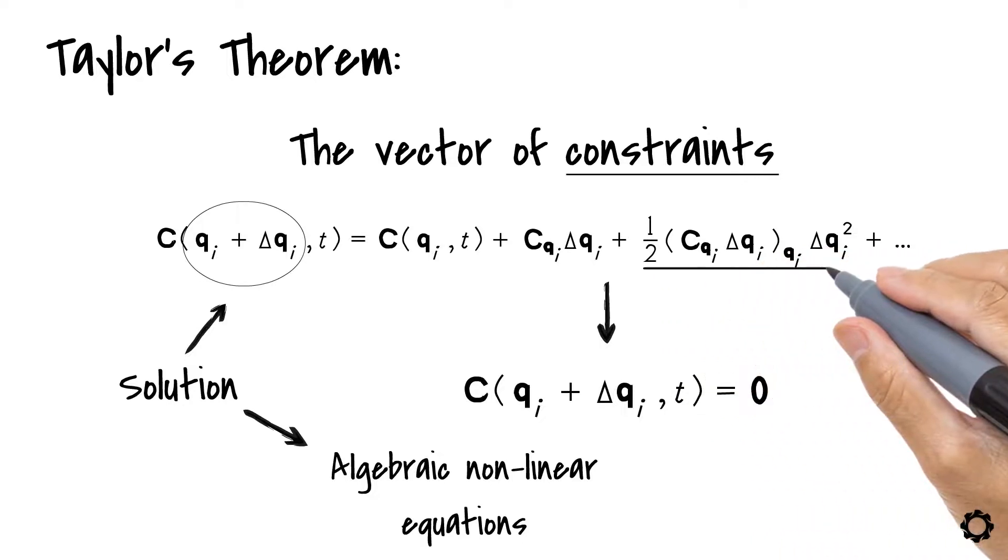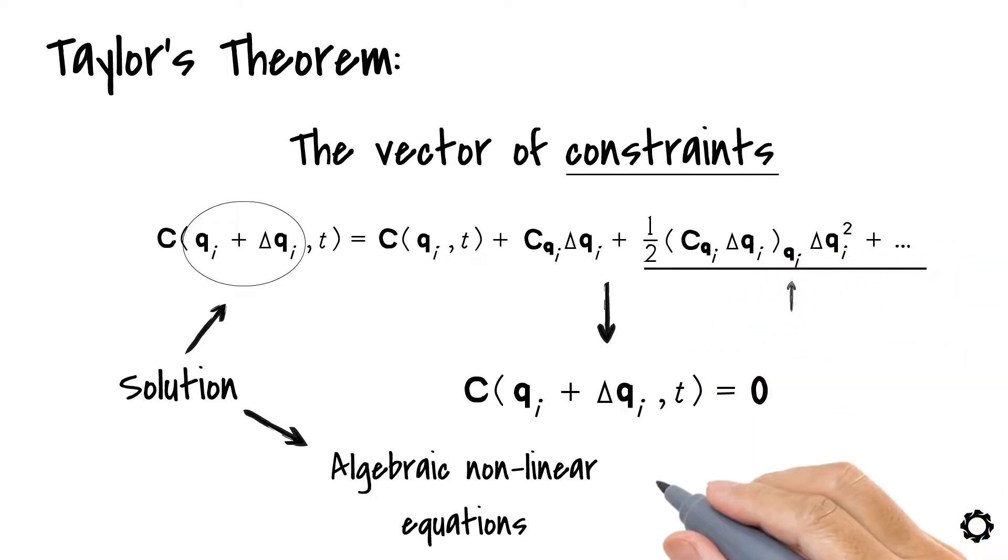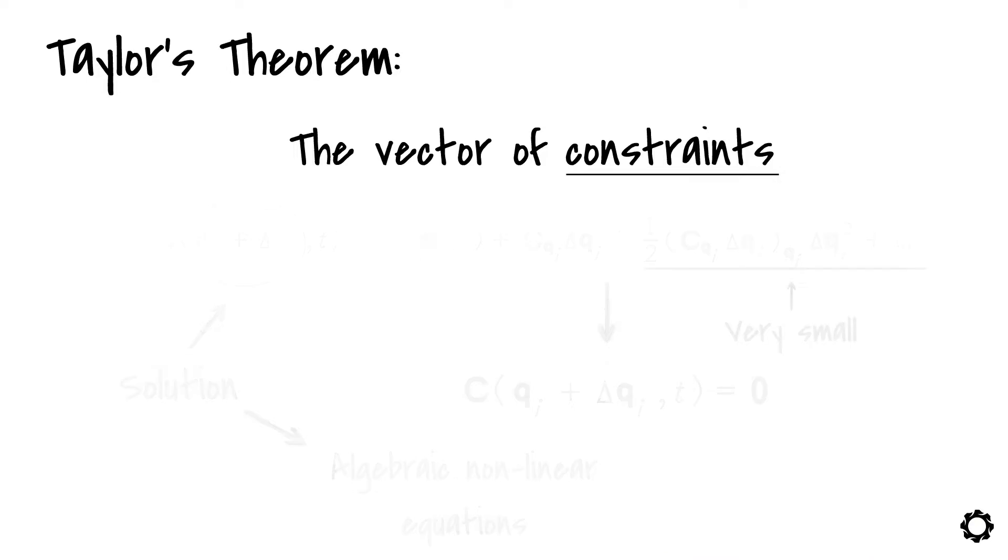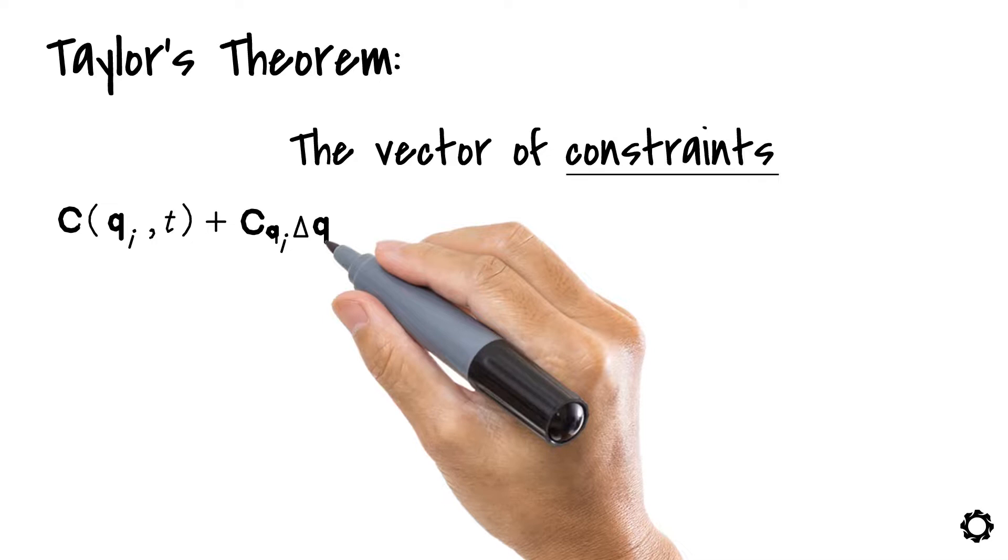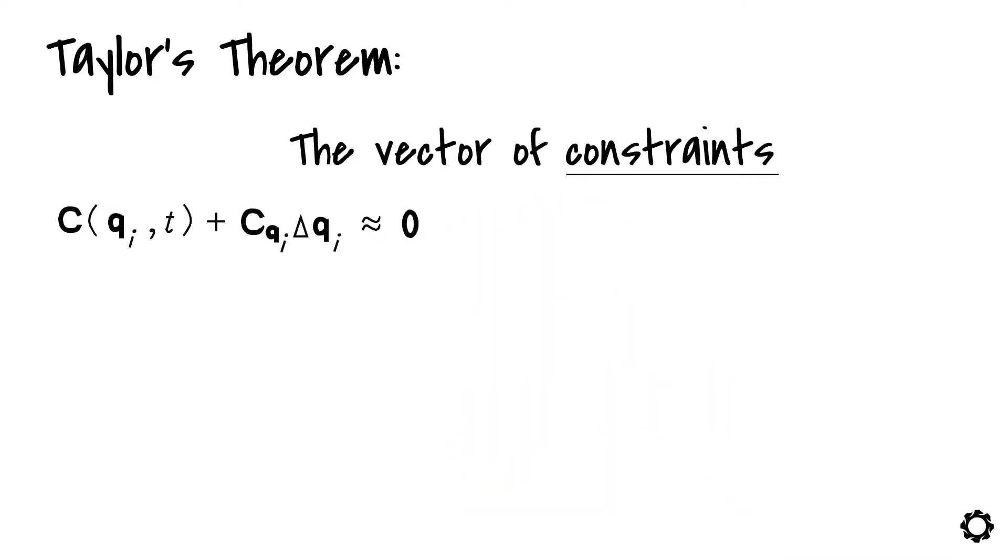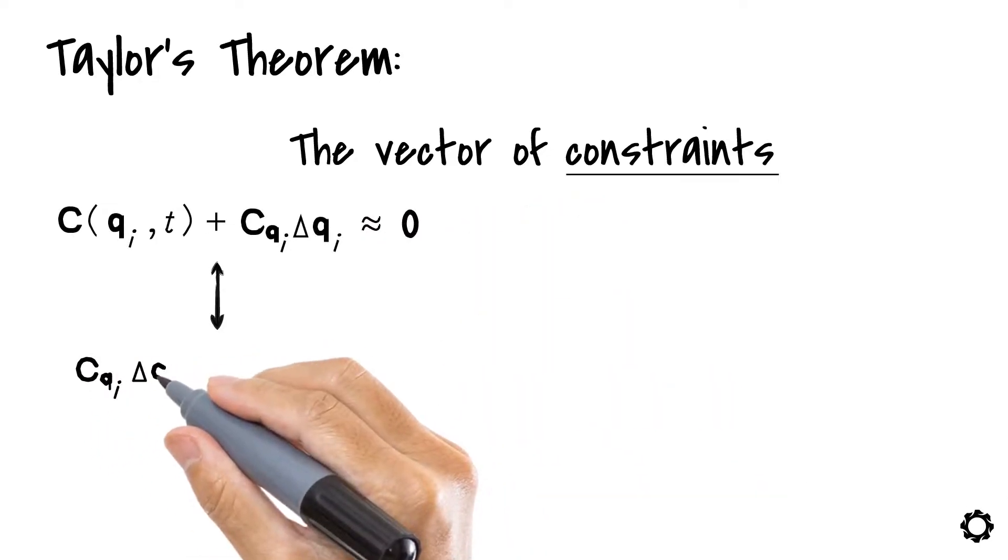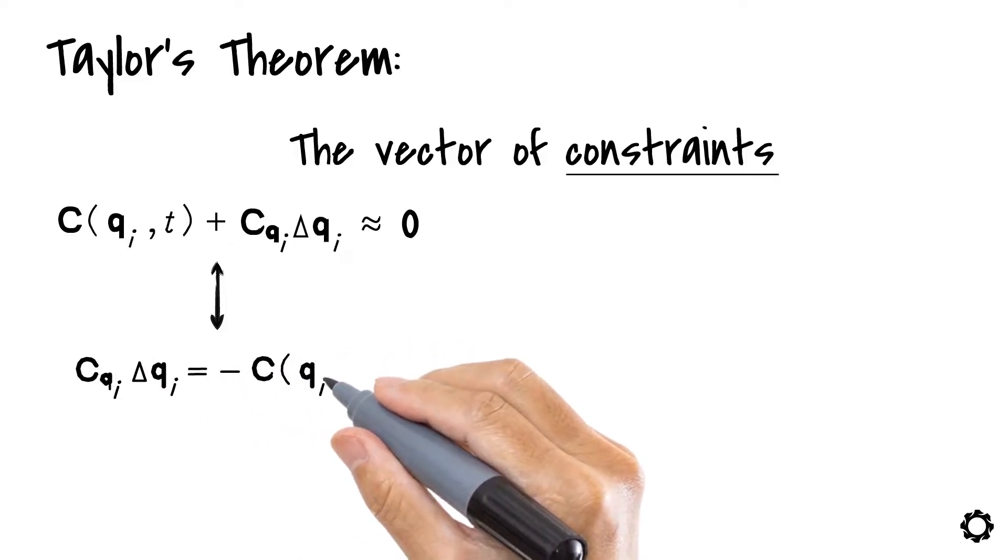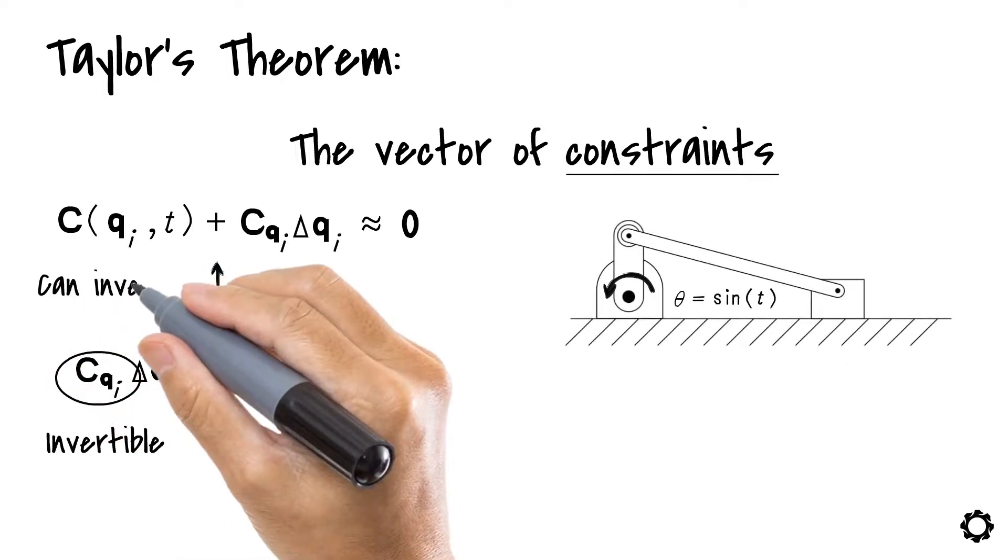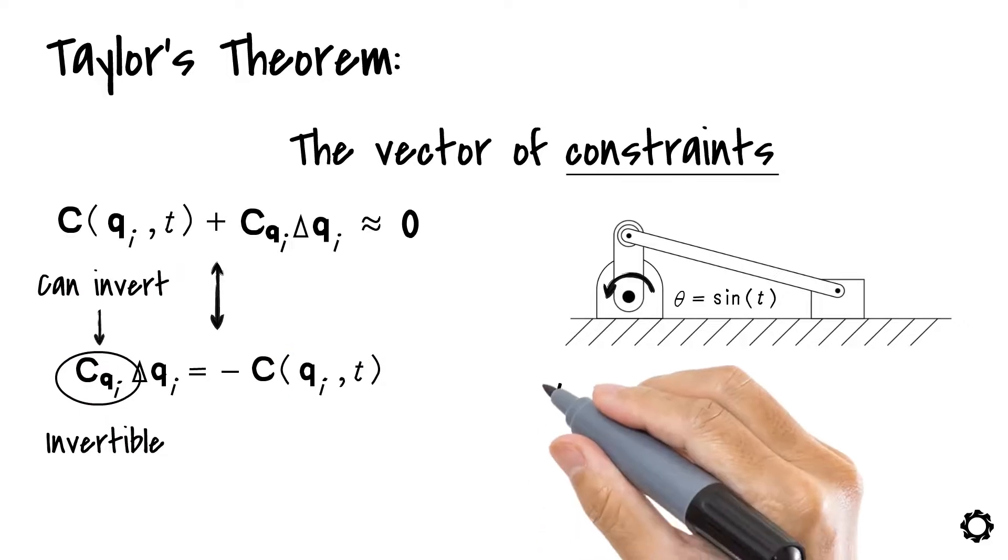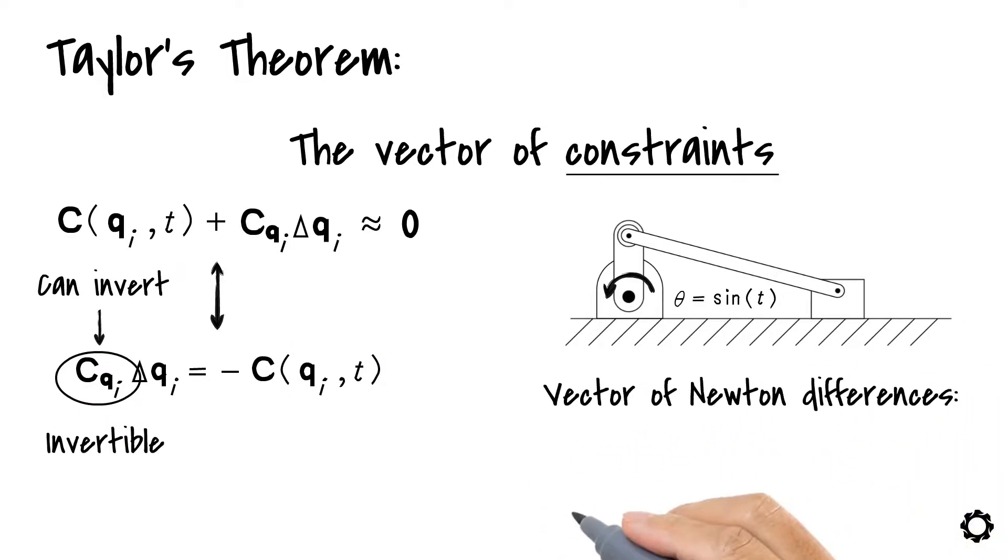And if we consider that the higher order terms in the Taylor expansion series are very small, we can rewrite our equation as C(qi, t) plus C_qi delta qi is approximately equal to zero, or C_qi times delta qi equals minus C(qi, t). Considering our Jacobian matrix to be invertible and because we are talking about a kinematically driven mechanism, we can invert the Jacobian matrix to obtain the vector of Newton's differences. Delta qi equals minus C_qi inverse times C(qi, t).